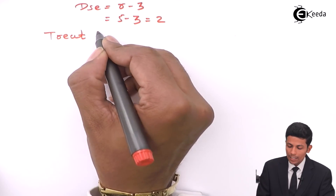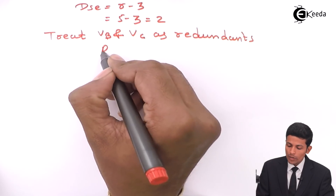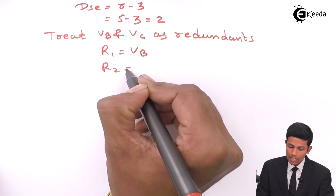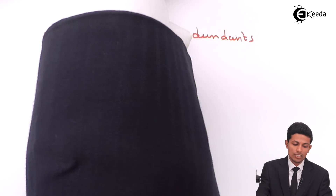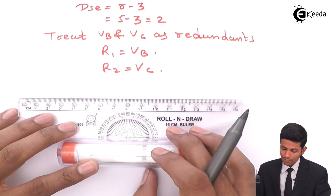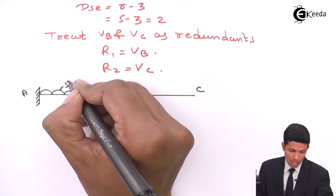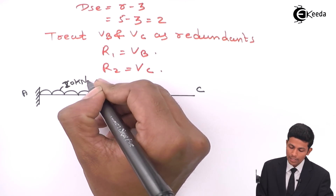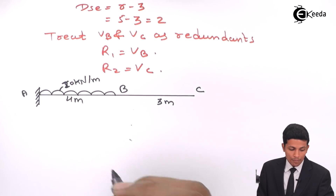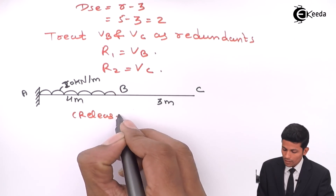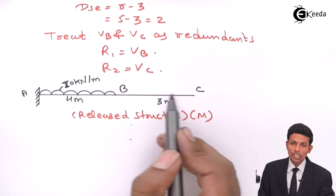We treat VB and VC as redundants — R1 will be VB and R2 will be VC. We remove VB and VC and then draw the release structure diagram. The release structure shows 20 kN/m over 4 meters (span AB) and 3 meters (span BC). We remove VC and VB and draw the diagram as it is.